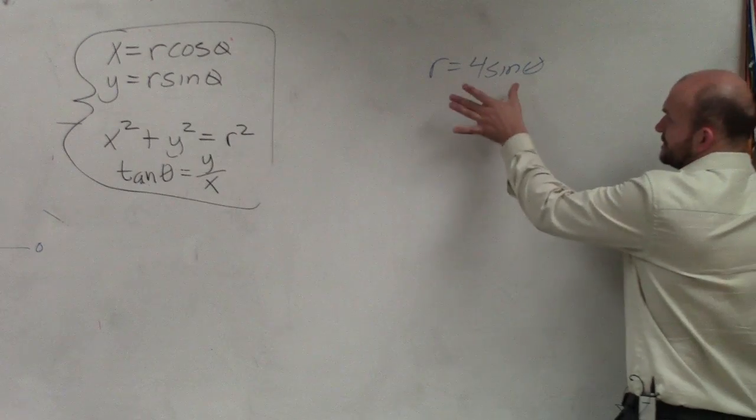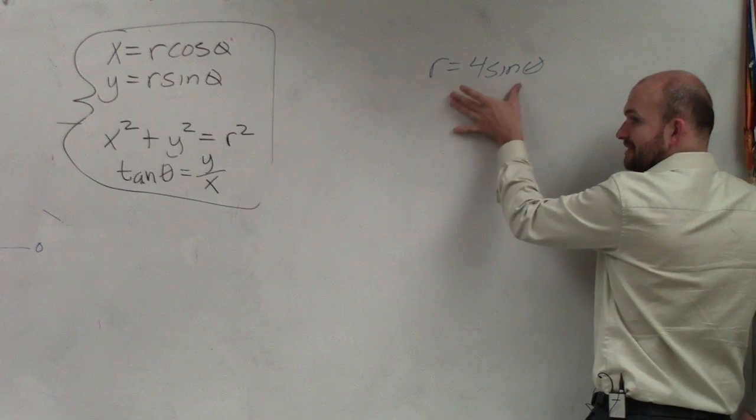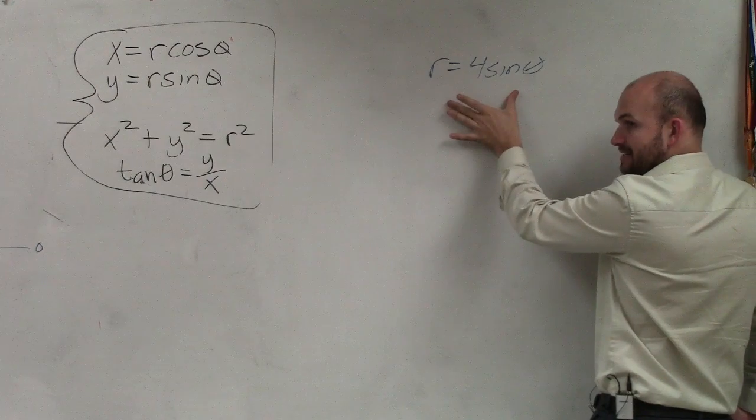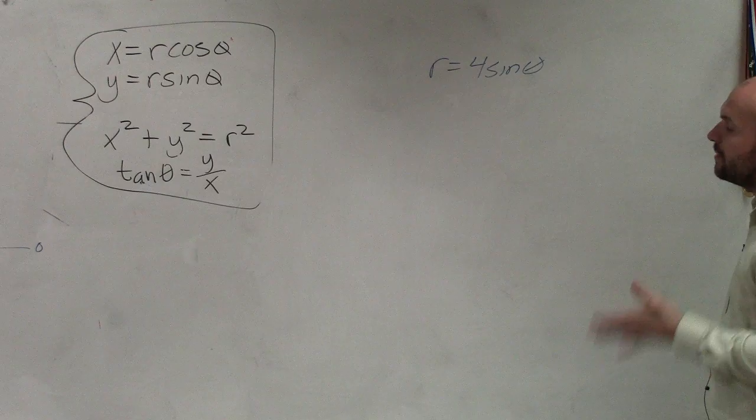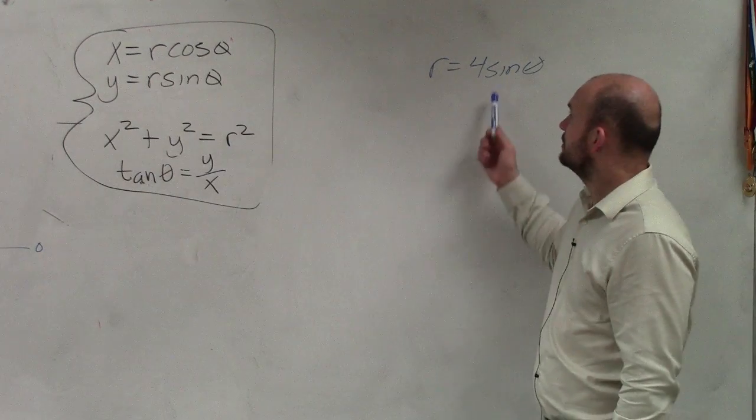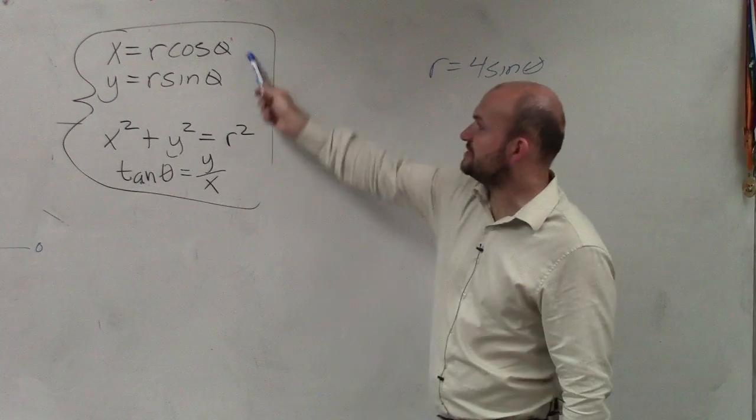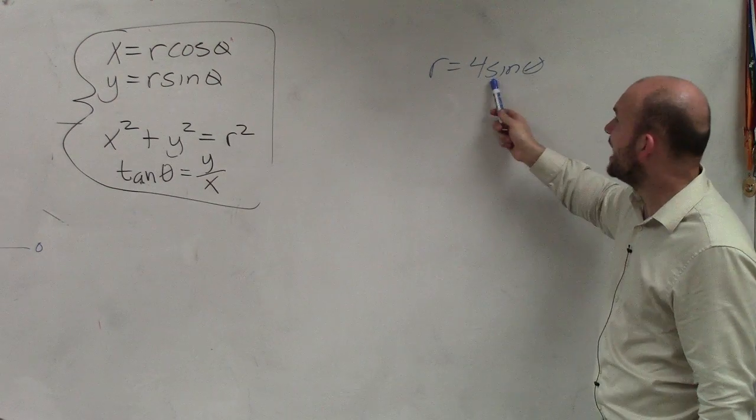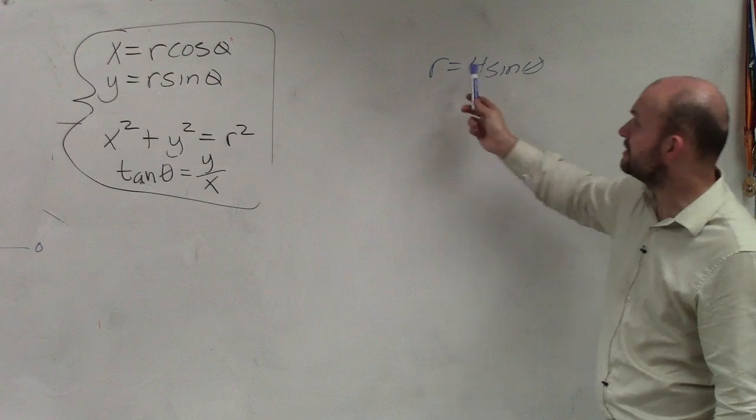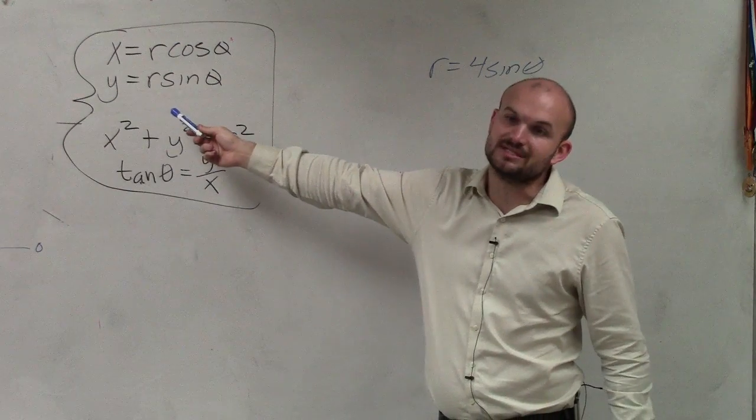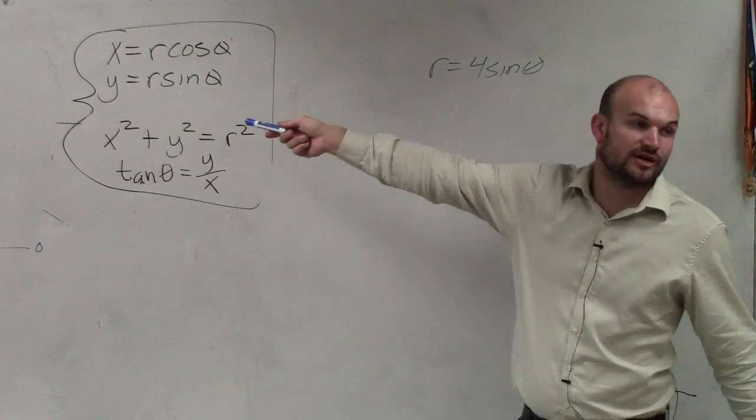So what I want to do is use those to rewrite this in only terms of x and y's. What I notice here is this isn't in any of these two forms. But I can get this to be in that form. If I can get this to maybe look like r sine theta, then I can convert it for y.